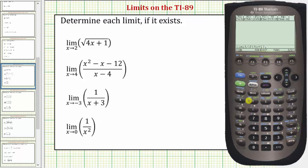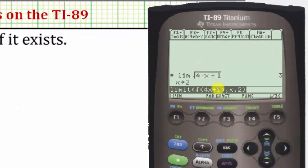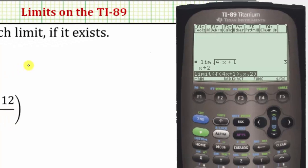Comma, the variable is x, comma, we're approaching x equals two, so we enter two, close parenthesis, and enter. Notice the limit is equal to positive three, which we could have found by performing direct substitution.